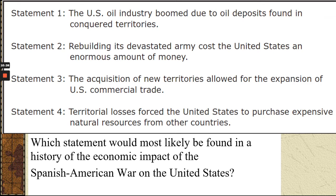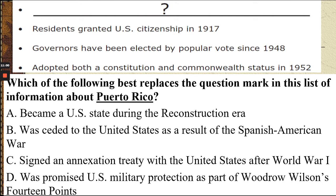Which statement would most likely be found in a history of the economic impact of the Spanish-American War on the United States? This is a typical EOC question. Look for an economic impact that has to do with the Spanish-American War. And the answer about Puerto Rico: residents granted U.S. citizenship in 1917, governors elected by popular vote since 1948, adopted both the Constitution and Commonwealth status in 1952. Which of the following best replaces the question mark in this list of information about Puerto Rico? The answer is B.